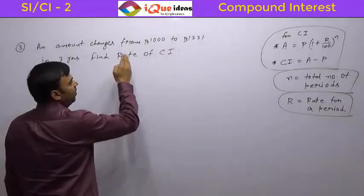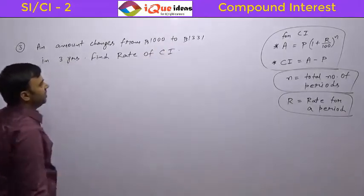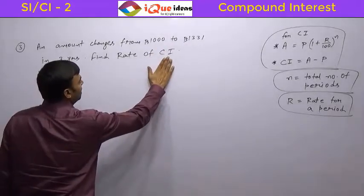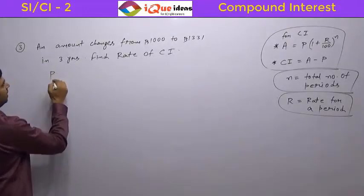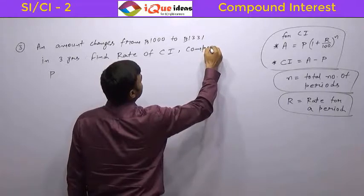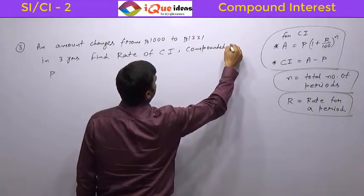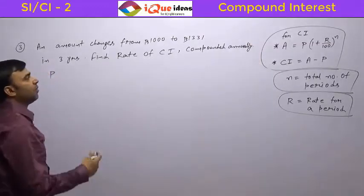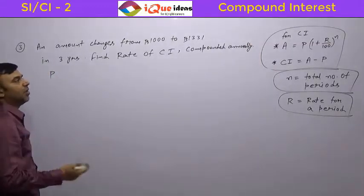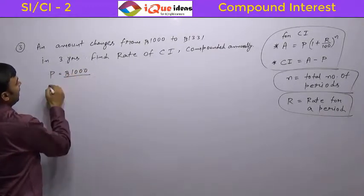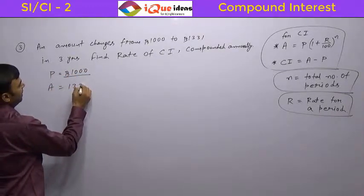This question says an amount changes from 1000 to 1331 rupees in three years, find rate of compound interest. In this case, it is already given compound interest compounded annually. That is important to be given because we need to know the number of periods, whether it is equal to the number of years or not. So here P is given as 1000 rupees, A is given as 1331 rupees.